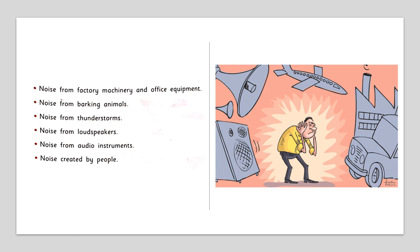Noise from factory machines and office equipment — in a factory, machines are working and create noise. Noise from the barking of animals — maybe a dog is barking or any other animal is making too much sound. Noise from thunderstorms — nowadays you hear thundering and lightning, that noise. Noise from loudspeakers — maybe at a party, a marriage function, an announcement, or a political function, a lot of noise is made by loudspeakers.